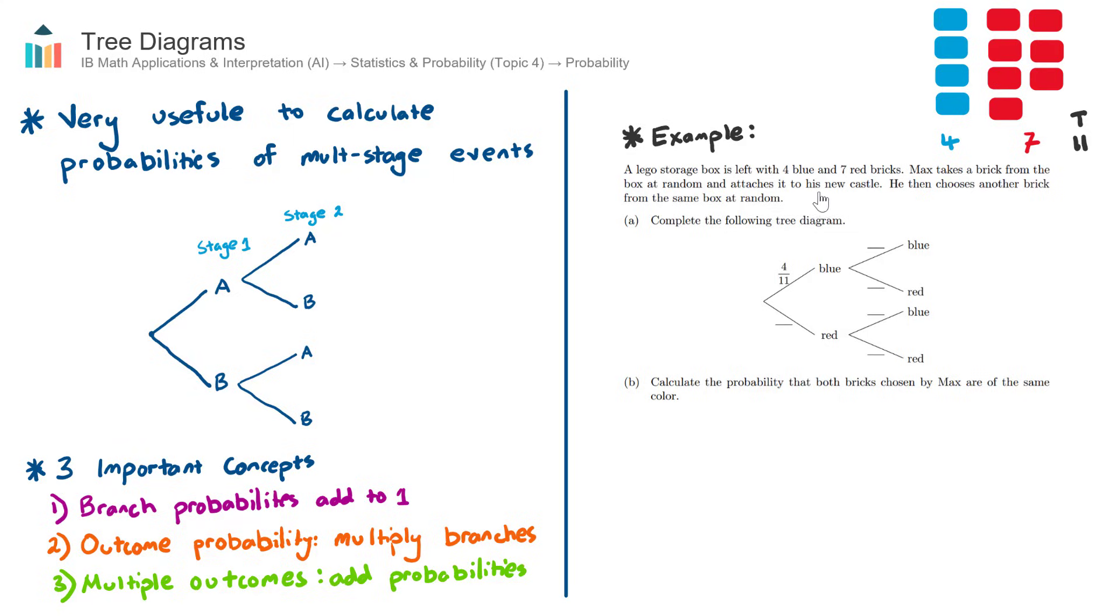He then chooses another brick, the second brick, from the same box at random. Reading this question, even without seeing the tree diagram, I'm thinking tree diagrams are going to be useful to calculate probabilities because this is a multi-stage event. Max selects the first brick, which we'll call stage one, and then he selects a second brick, stage two. Tree diagrams are very useful to calculate probabilities of multi-stage events.